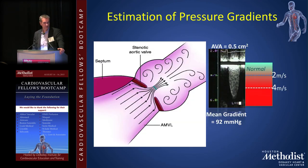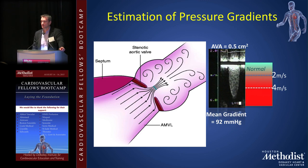This shows the LVOT, a stenotic aortic valve, and the vena contracta — the narrowest portion — with accelerated velocity distal to the orifice. As a general rule on echo, any velocity over 2 m/s — with the exception of mitral regurgitation — needs attention. Pulmonic stenosis, tricuspid regurgitation, mitral inflow: if you see a velocity over 2 m/s, pay attention and determine if it's normal. In this aortic stenosis example, velocity is about 5 m/s. For reference: 2 m/s is normal, 4 m/s is severe, over 4 m/s is more severe.